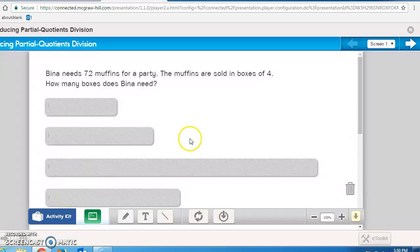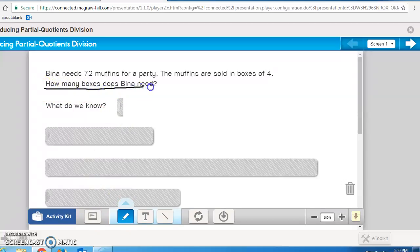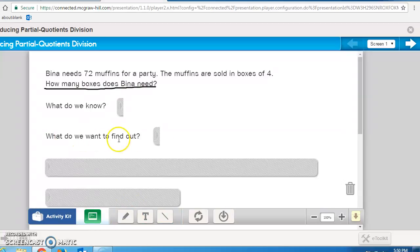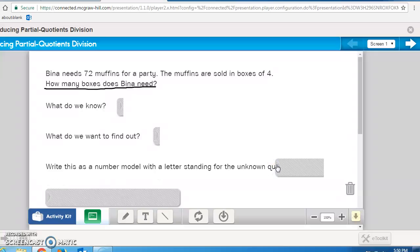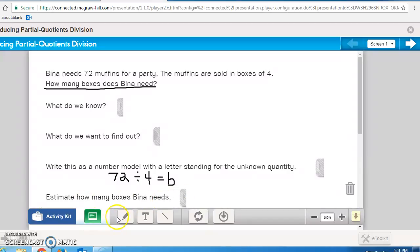Let's take a look at this next problem together. It reads, Bina needs 72 muffins for a party. The muffins are sold in boxes of 4. How many boxes does Bina need? So again, our big questions, what do we need to know? Right here. We need to know how many boxes Bina will need. What do we want to find out? Again, the exact amount of boxes. Write this as a number model with a letter standing for the unknown quantity. Hopefully you're realizing that we would write that as 72 divided by 4 equals, and since I need boxes, I'm going to write the unknown as letter B.